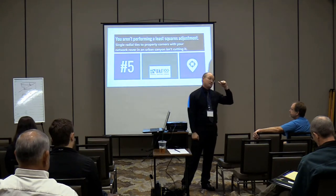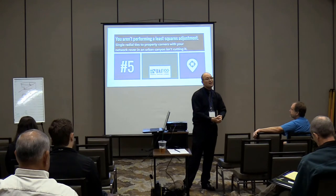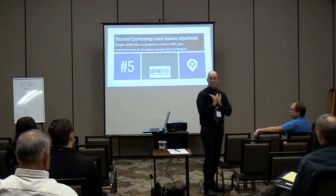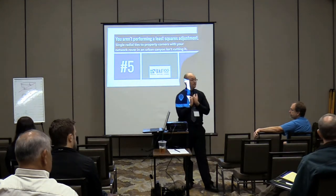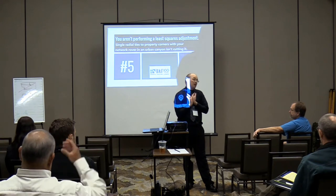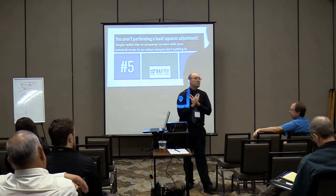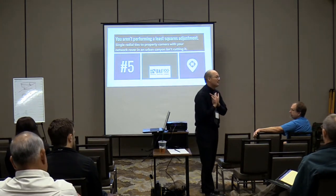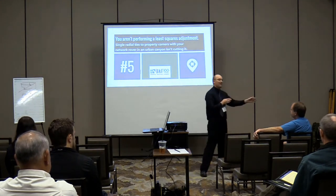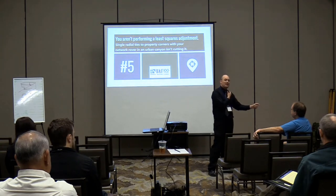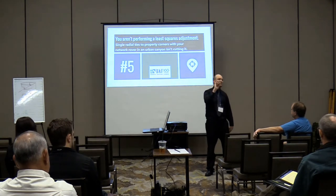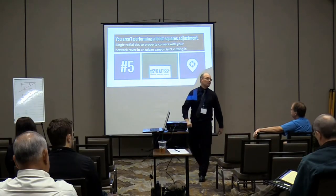I guarantee there are guys out there who don't do this. Why do they make you do a least squares adjustment? It's your control on your corners — it says all boundary control. They're trying to weed out the guys who go out, find two centerline nails, turn the record bearing, set two corners, and file a corner record. They're trying to keep those guys from doing land title surveys. There's a certain level of sophistication you've got to have to do a least squares adjustment — that's why they put it in the spec.